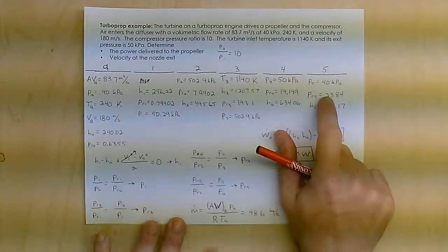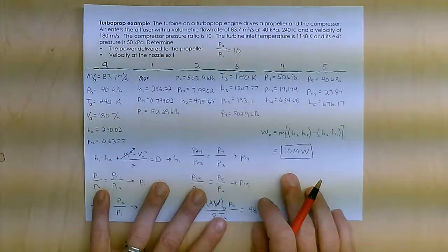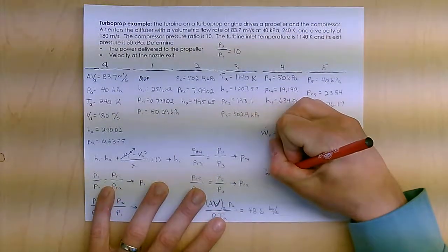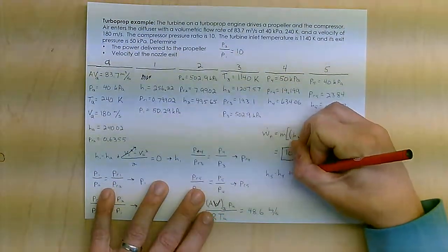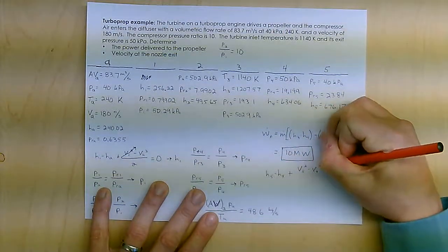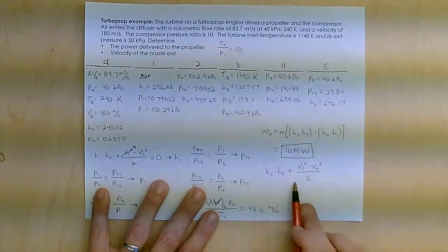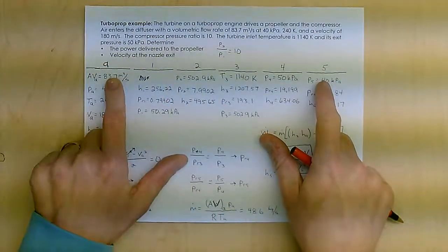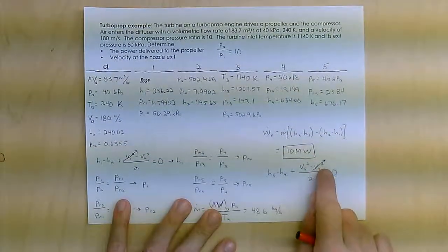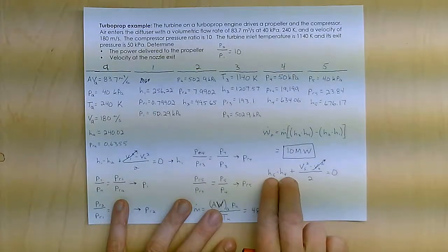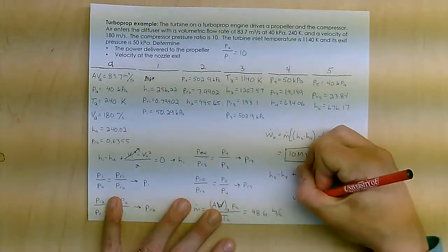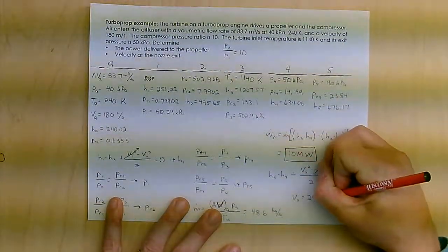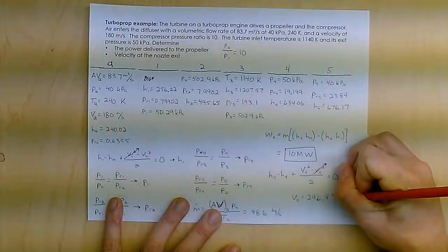Then the last thing I want to find is, what's the velocity over here? I'm going to use a similar idea that I used over here, which is to say H5 minus H4 plus V5 squared minus V4 squared. It's essentially the change in enthalpy is equal to the change in kinetic energy. My velocity in this range is so much smaller than what's coming into the diffuser and out of the nozzle that I assume it's zero, so I can find that V5 just by delta H times 2 square root. Do some unit analysis, and I get 296.4 meters per second.